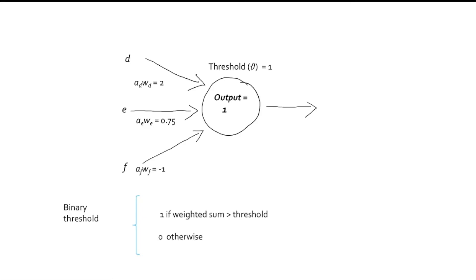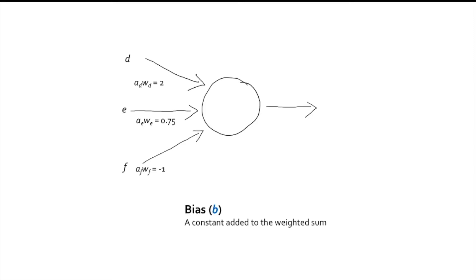Last week, we mentioned the term bias, but we did not say much about it. A bias is a term that is added to the weighted sum, to make certain learning problems easier. In this particular case, I'm going to make the bias the negative of the threshold, which is minus 1. This will allow us to get rid of the threshold.